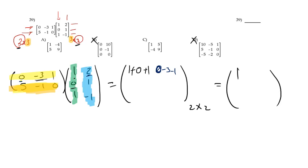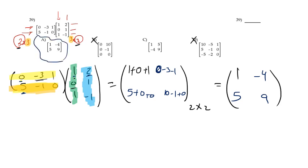Then 5 times 1 is 5, negative 1 by 0 is 0, and 0 by 1 is 0, which gives 5. Then 5 times 2 is 10, negative 1 by negative 1 is positive 1, plus 0, so it equals 9. The right answer is A. Make sure you can solve it without multiple choices, because it could appear in the free response section.